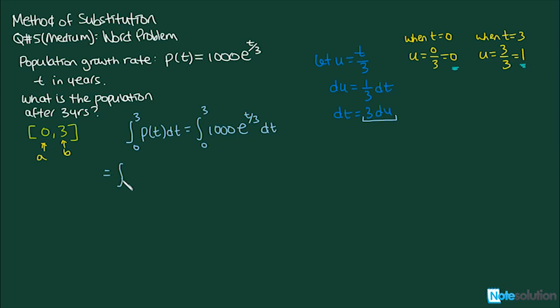We have, using substitution, we've got 0 to 1. And we have 1000, we've got e raised to the power of u and we've also got 3 du which is dt. So that simplifies to 3000 e^u.